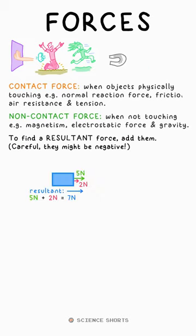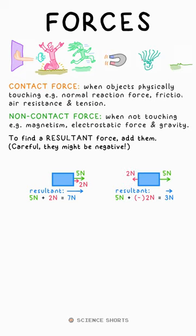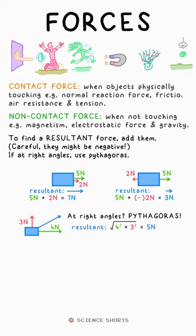If two forces act on an object, there's a resultant force. We find this by technically adding the vectors. However, if they go in opposite directions, one must be negative. If vectors are at right angles to each other, you use Pythagoras to find the resultant.